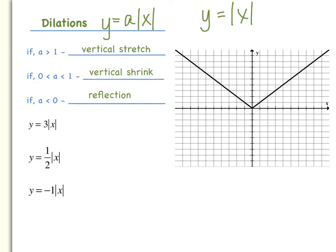Now, if your a value is actually less than zero, meaning it's a negative number, that's when we have a reflection. That's literally a reflection of the parent function over the x-axis, so your v would be upside down. Now let's look at some examples.